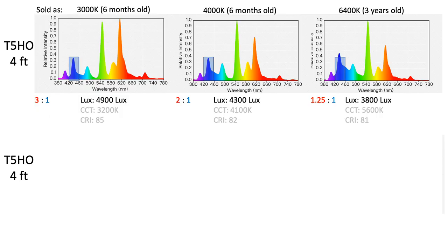The T5HO light setup has a very similar spectral analysis to T8 lights: a small UV light peak, then blue, green, and red peaks. These three different lights — 3000K, 4000K, and 6400K of various ages — show that 3000K has the most red light at 100%, 4000K has less red, and 6400K has even less red. Lux values are fairly consistent except the 6400K, which has a very low lux value because it's a three-year-old bulb. The ratio of red to blue: 3000K is approximately 3 to 1, 4000K is 2 to 1, and the three-year-old 6400K is 1.25 to 1 red to blue.